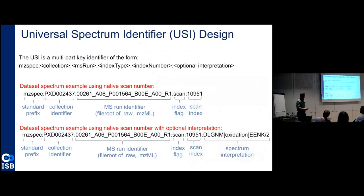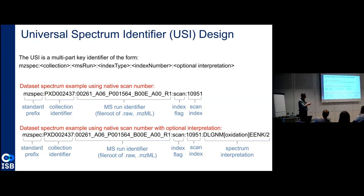So I'll tell you about the USI and what we have come up with so far. Instead of a hash that requires an algorithm to compute for a particular spectrum, the idea is that we come up with a multi-part key that has different components of what you need to identify a spectrum. It has a little preamble, then a collection identifier, an MS-run name, an index type, and an index number. That's all you need for the basic USI, but you could also optionally have an interpretation after that.